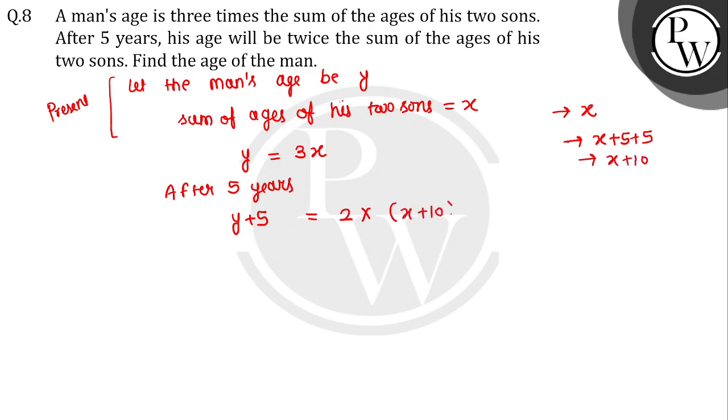Clear है ये चीज़? Y plus five is equal to two times x plus ten, which is 2x plus twenty.